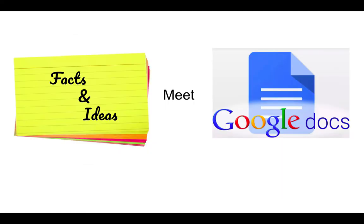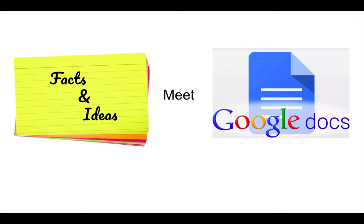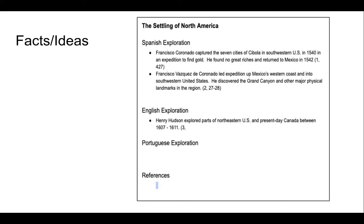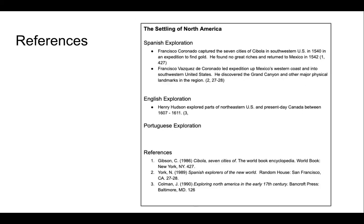So what happens when note cards meet Google Docs? Instead of cards, we'll use a Google Doc. Instead of headings at the top of each card, we will enter each topic as a heading in the Google Doc. We will insert the facts and ideas under the appropriate headings. The result is a list of facts grouped by category. And instead of a reference card, we'll have a list of references at the end of the list.